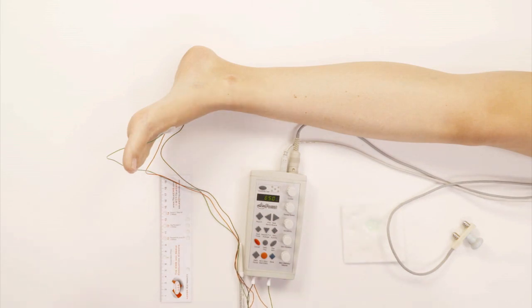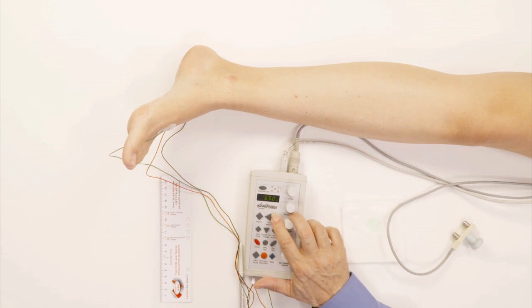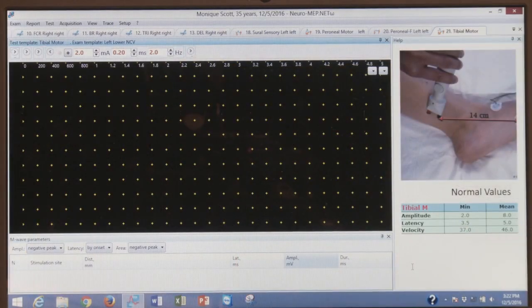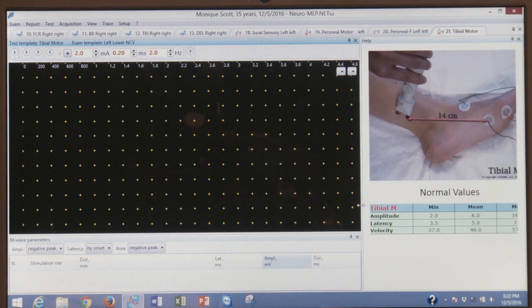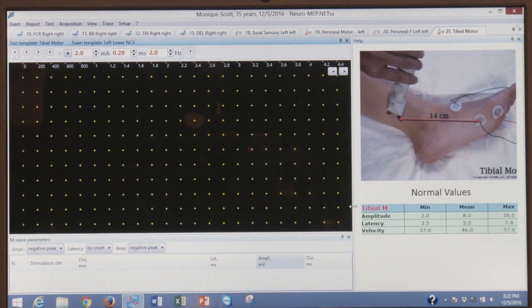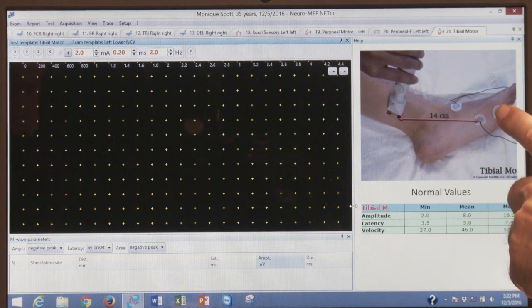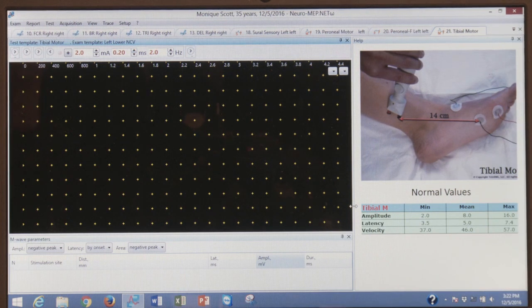The next nerve we're going to do is the tibial nerve. I press next and now you're going to see the tibial nerve pop up here. We stimulate the tibial nerve at the ankle, right behind the ankle. Here's where we put the electrode. We put the black right below the bone right here, the foot bone. And we put the red electrode right on the bone itself.